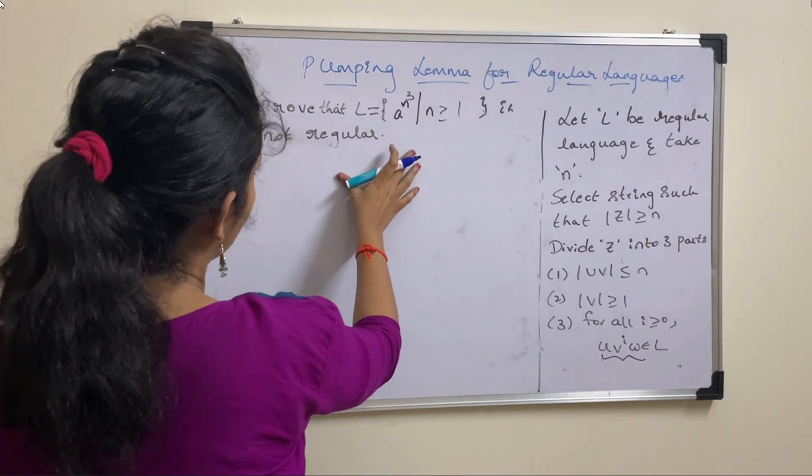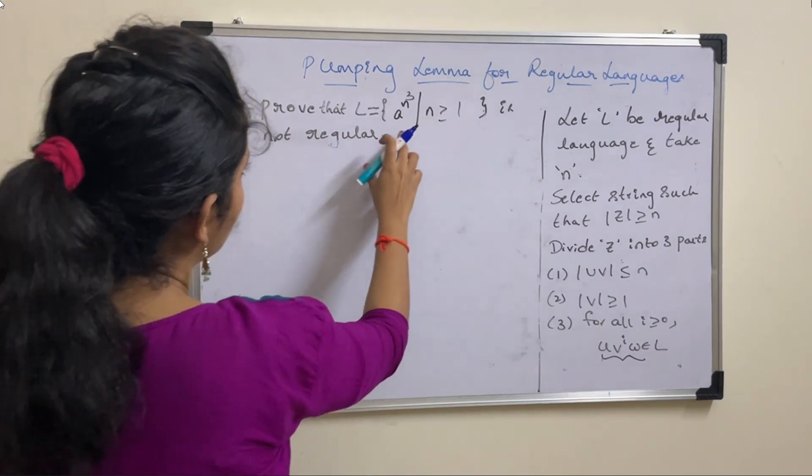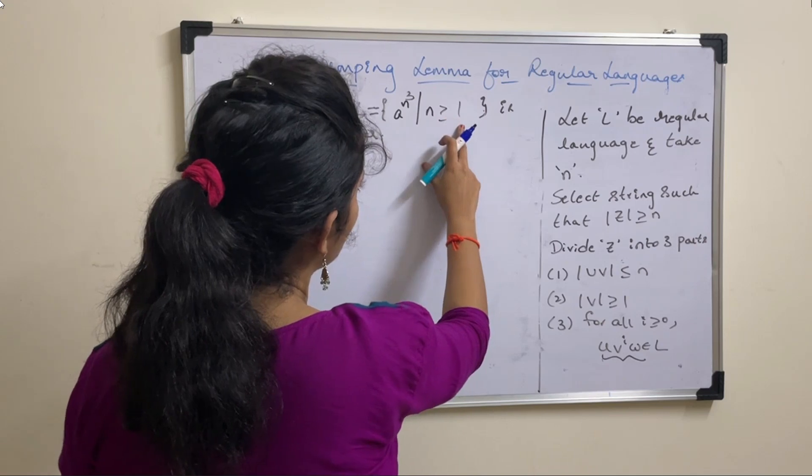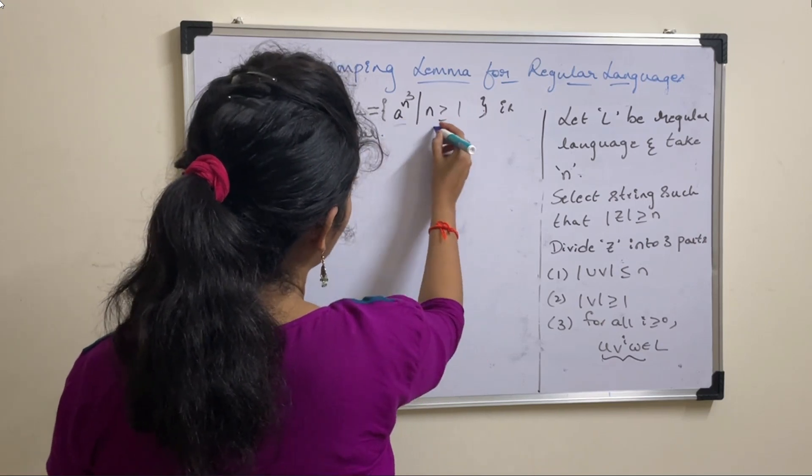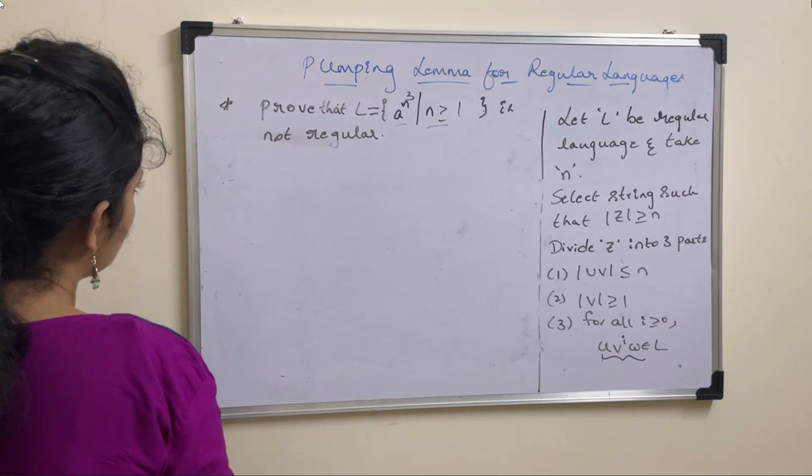So here we will consider one more example. Let us prove that language L equal to a bar n cube, such that n greater than or equal to 1, is not a regular language.